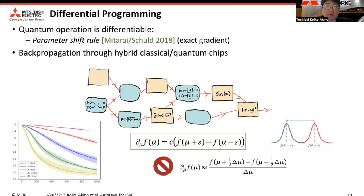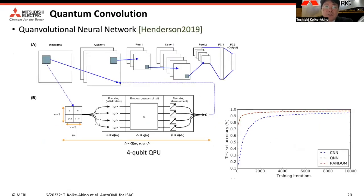In the past, quantum processors were a black box. However, some papers showed that quantum processing can be differentiable — for example, using the parameter shift rule, enabling exact calculation of gradients. Because QPUs are differentiable, we can integrate quantum and classical processors to backpropagate gradients and optimize parameters in the computing graph. One such example is a quantum convolutional neural network, which uses a quantum processor to convolve image pixels integrated within a classical CNN.